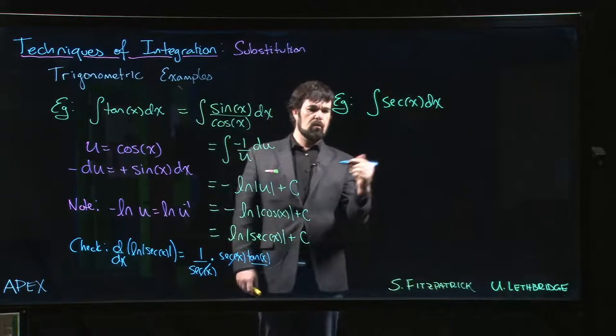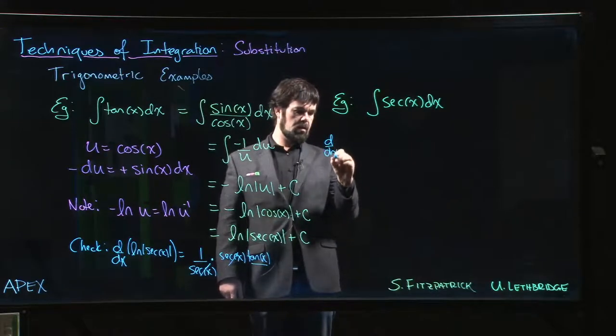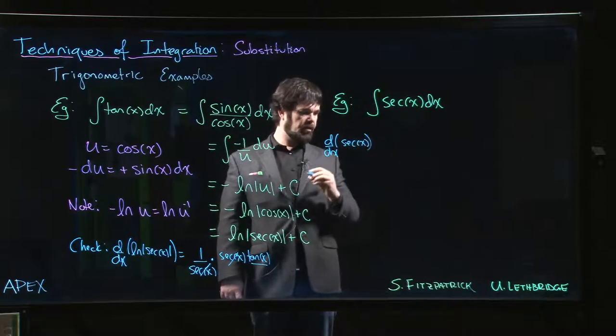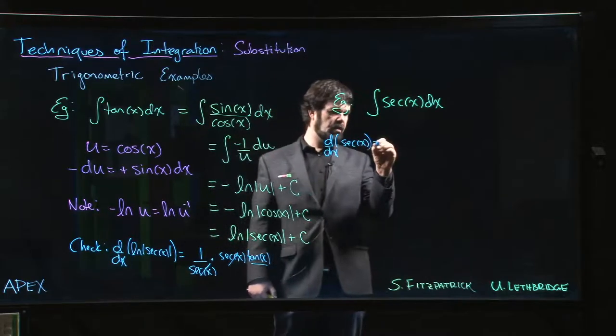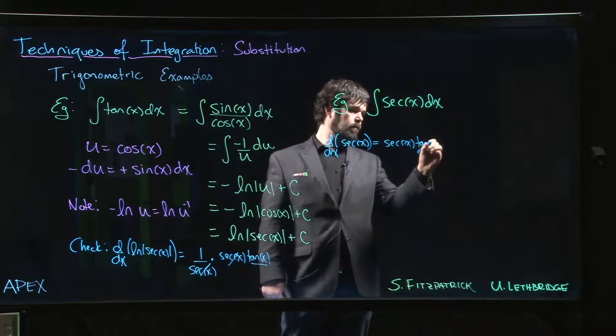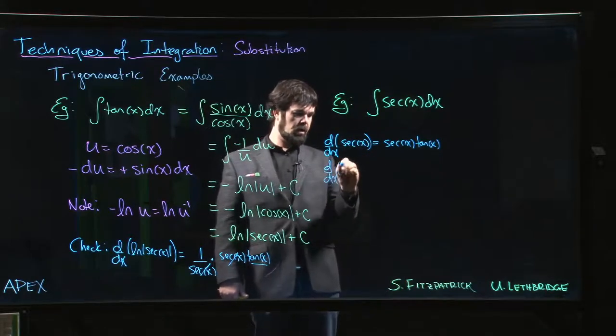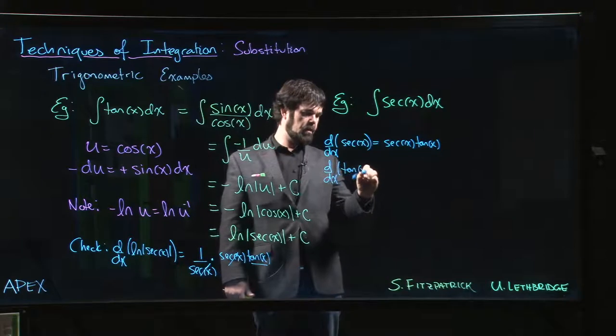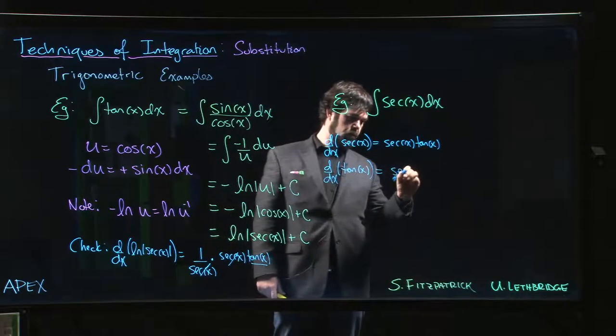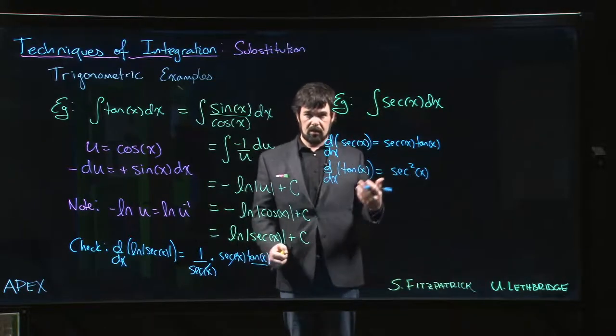So what you do is you play around a little bit and you think about the derivatives of secant. So the derivative of secant, we know that that's secant x times tan x. And we know that the derivative of tan is secant squared.